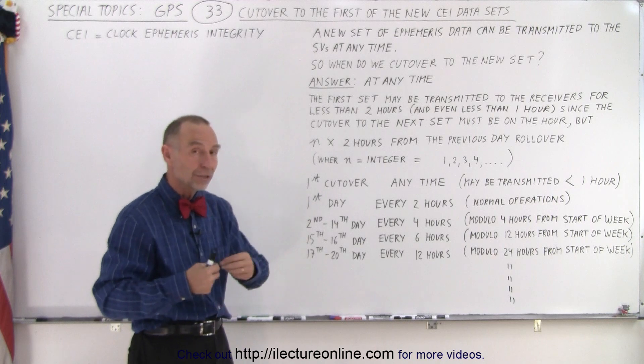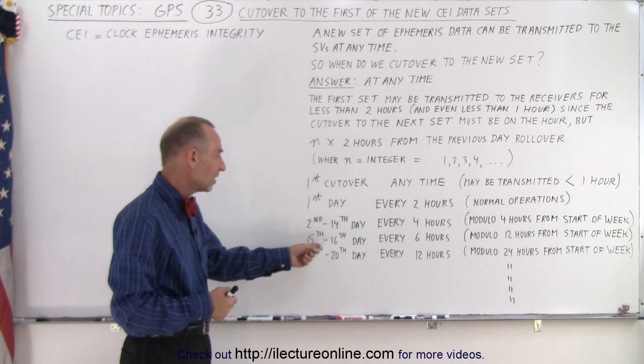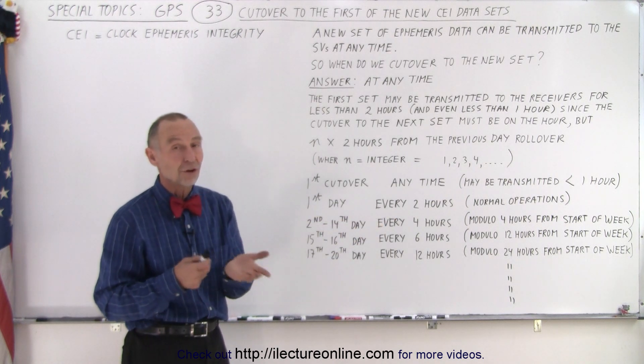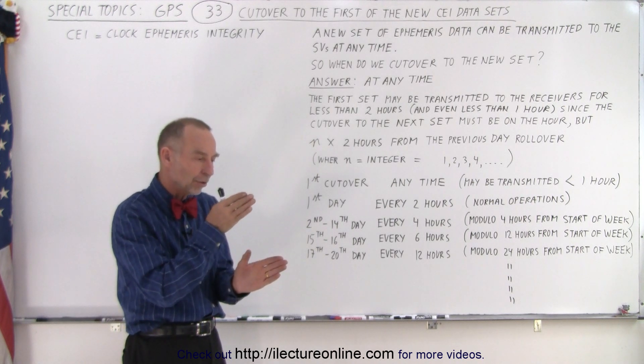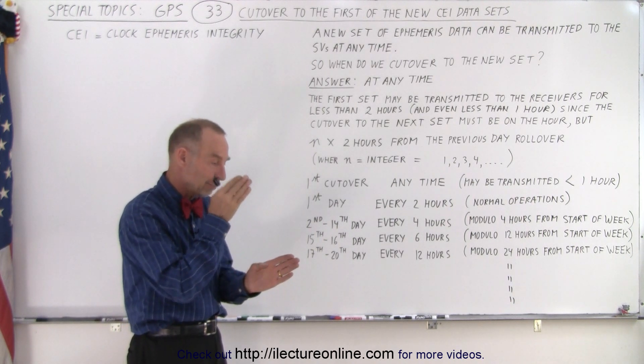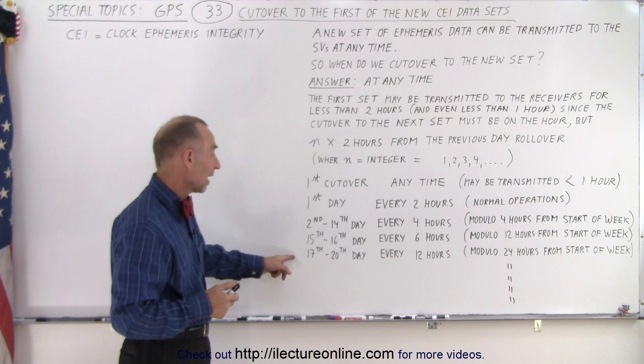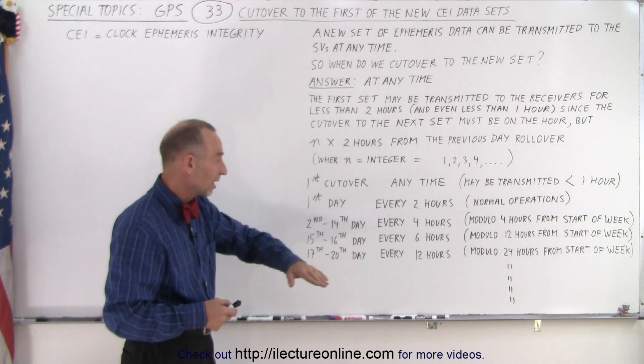For the 15th to 16th days, you do it every six hours, but again it's modulo 12 hours from the start of the week. We sent every four hours until we get to the point where now it's on 12-hour intervals—that would be at midnight or at noon. And then after that, from the 17th to 20th day, every 12 hours the data set is sent.